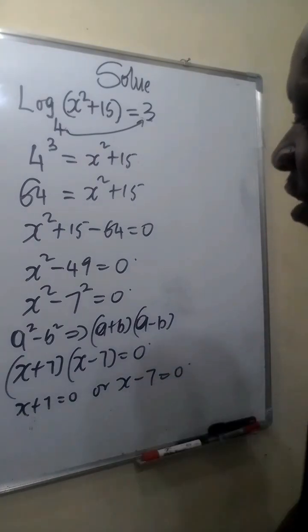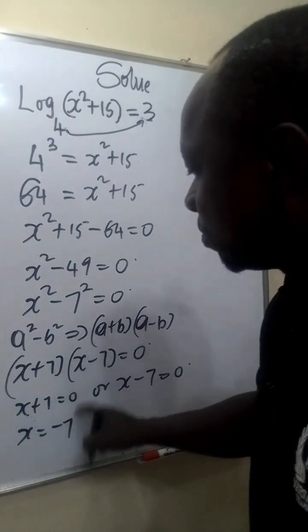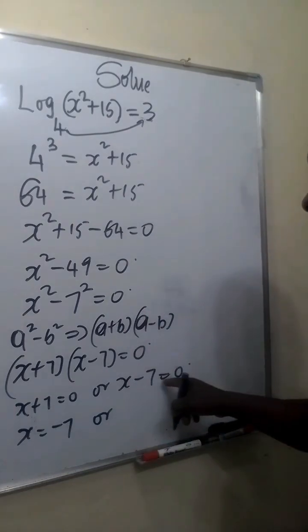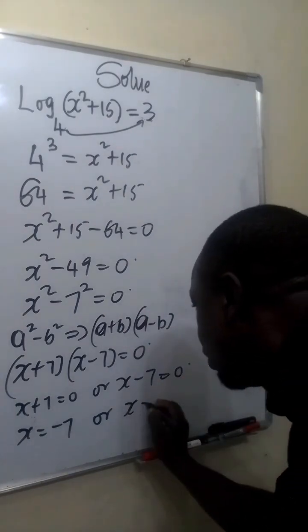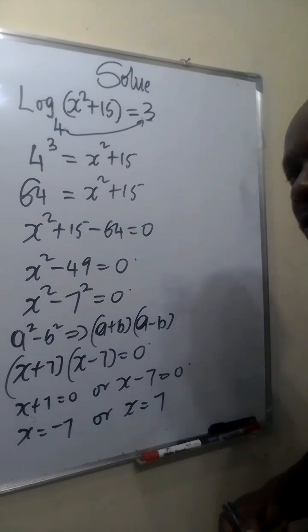When x plus 7 equals 0, the value of x is negative 7. Plus 7 will move to become minus 7. Or when x minus 7 equals 0, x equals 7. Minus 7 will move to become plus 7.